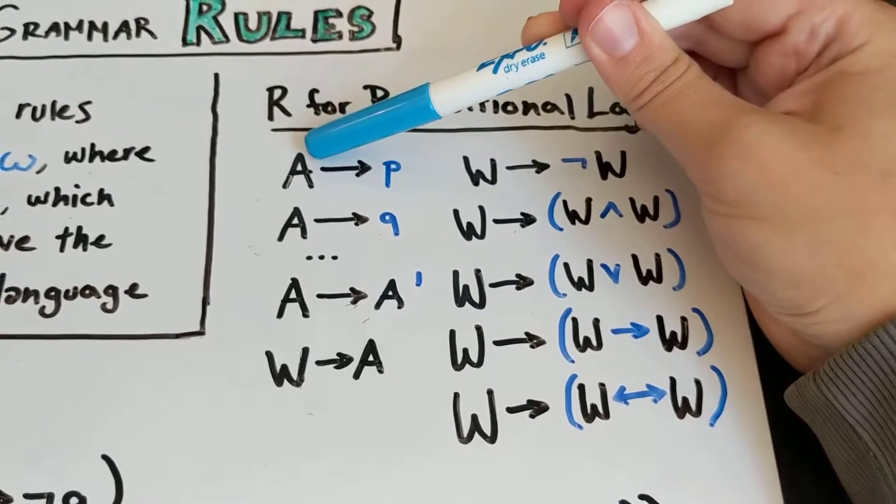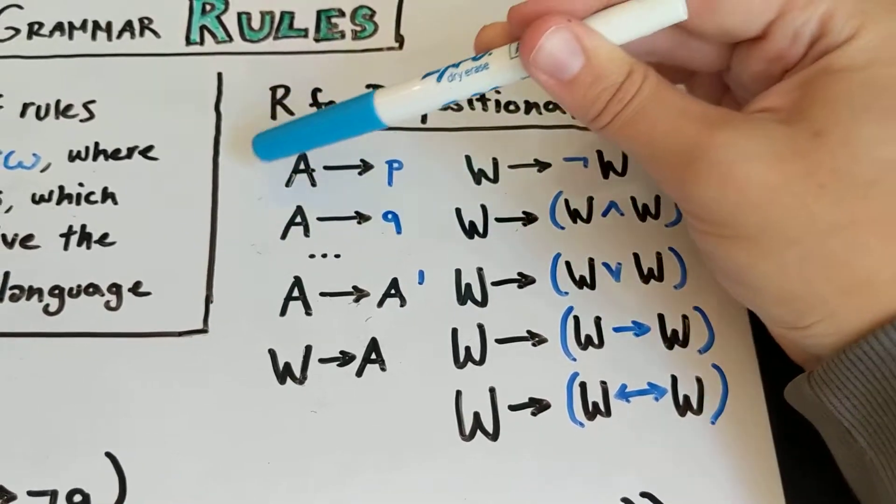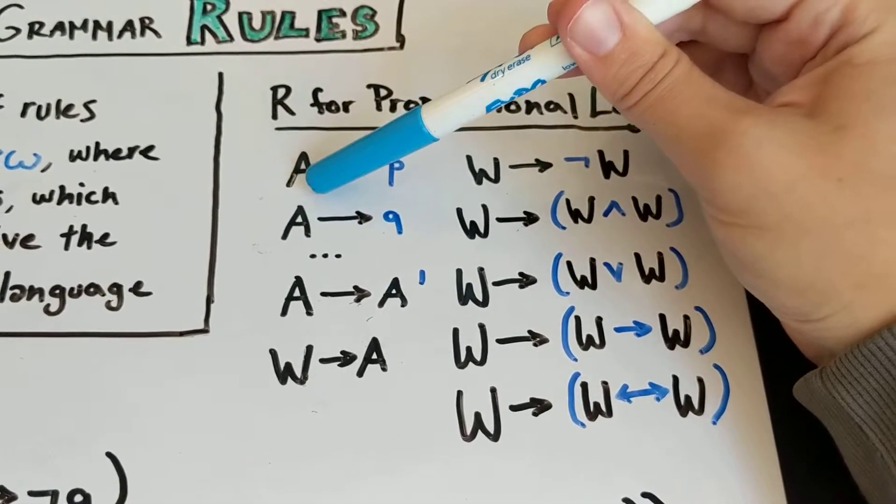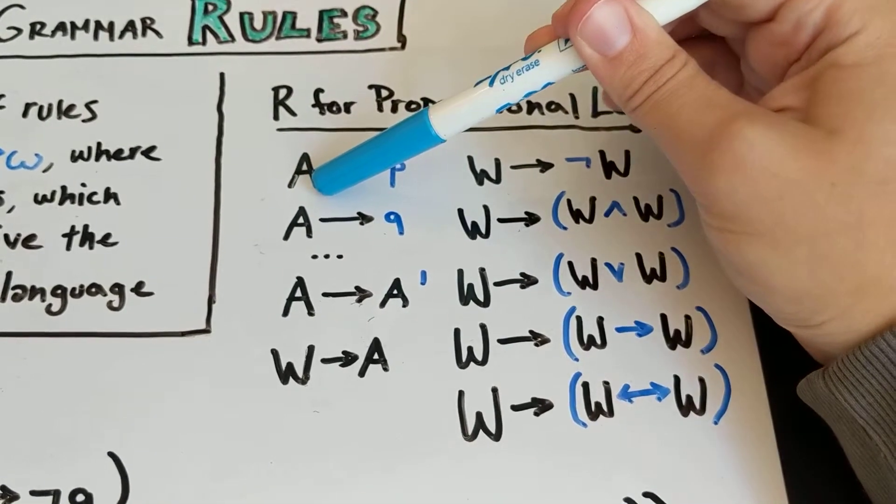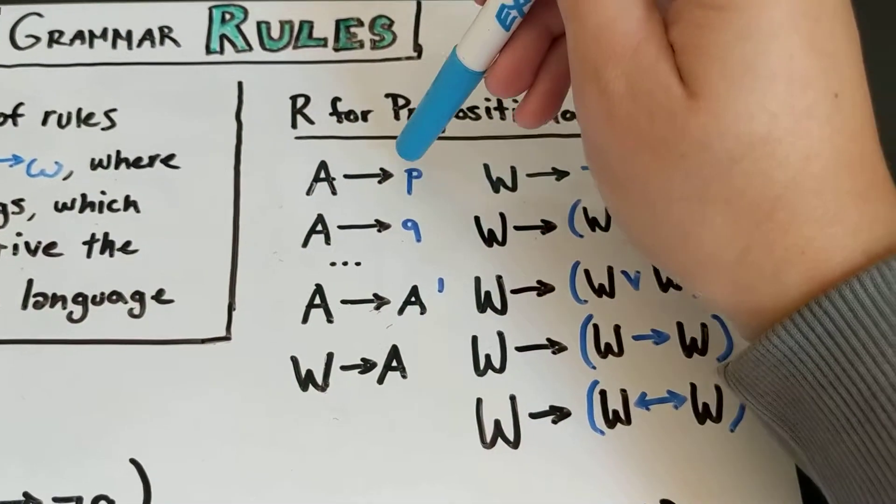So we have A which is one of our, oh what's the word for that? It's one of the words for our basic, our most basic sorts of formulas in propositional logic.